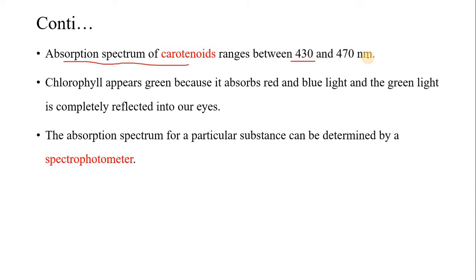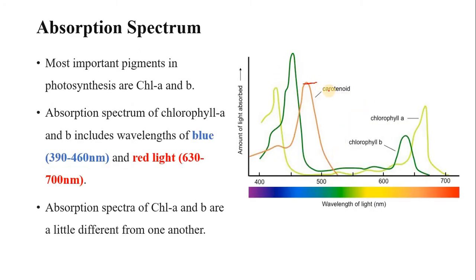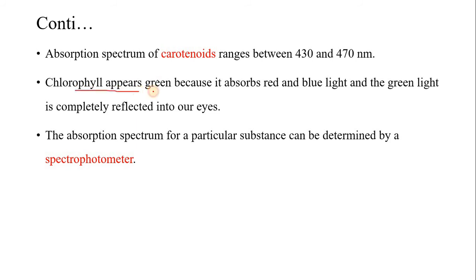The absorption spectrum of carotenoids ranges between 430 to 470 nanometers, meaning carotenoids have a different absorption spectrum from chlorophyll A and chlorophyll B. The curve shown here indicates the carotenoid absorption spectrum — carotenoids absorb different wavelengths from chlorophyll A and chlorophyll B. Chlorophyll appears green because it absorbs mostly blue and red light, and the green light is completely reflected into our eyes. The color appearance is due to light reflection, and since green light is mostly reflected from chlorophyll, that is why chlorophyll and green plants appear green.